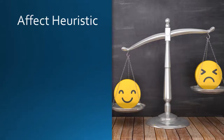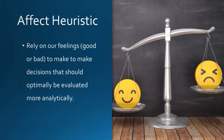The third one is the affect heuristic. This bias refers to the tendency to make decisions based on emotional or intuitive feelings rather than logic or reason. This bias can influence our decisions about things like what we eat, how we vote, or who we trust. For example, if someone has a positive emotional reaction to a particular brand, they may be more likely to buy that brand even if it is more expensive or less effective than other options.